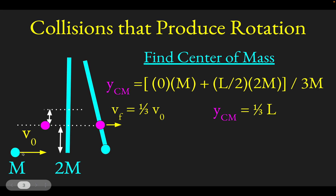Before the ball hits the stick, the center of mass — shown as a magenta dot — is just drifting to the right. After the crash, that center of mass continues as though nothing ever happened, moving at one third the initial velocity of the ball. The system rotates around this center of mass point, which is one third of the way up from the end of the stick.